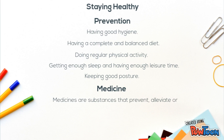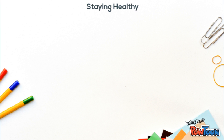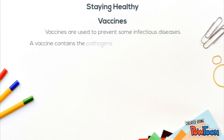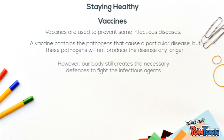And what about medicines? Medicines are substances that prevent or cure diseases. They should only be taken when prescribed by a doctor. Vaccines are used to prevent some infectious diseases. A vaccine contains some pathogens that cause a particular disease, but these pathogens will not produce the disease any longer. However, our body still creates the necessary defenses to fight infectious agents.